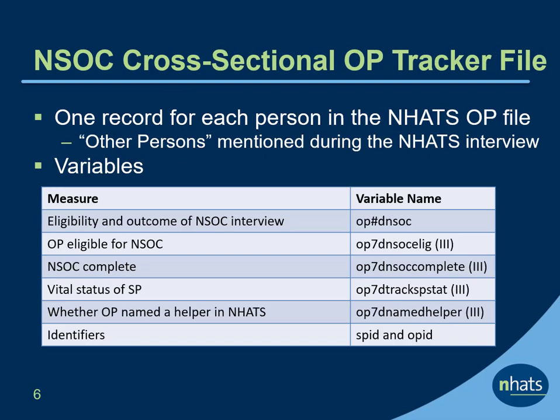The NSOC cross-sectional OP tracker file provides information about NSOC eligibility at the OP level. The file includes one record for each person in the NHATS OP file in the current round of NHATS. The NHATS OP file has a record for each other person mentioned during the NHATS interview, including NSOC eligible helpers. Each round, the NSOC OP tracker file includes a variable that combines information about eligibility for NSOC and the outcome of the interview. NSOC 3 includes several additional variables summarizing the OP's eligibility, outcome for NSOC, and whether the SP was living or deceased. Each record in the file has two identifiers, the SP ID and the OP ID.